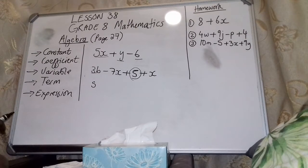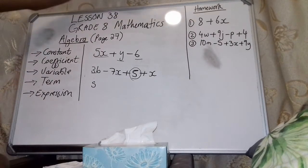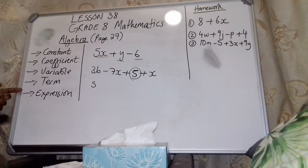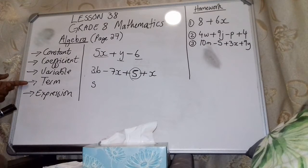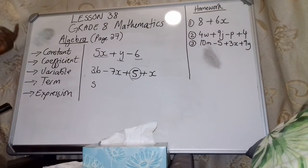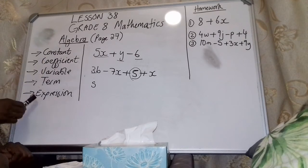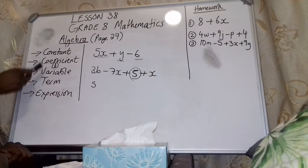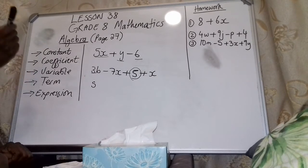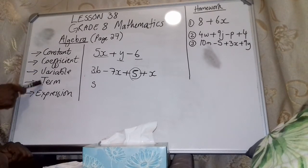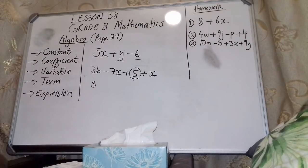Let me recap. An expression is made up of terms. A term is made up of variables and a coefficient. Sometimes a term is just a number with no variable — and we call that a constant. So: expression → made up of terms; a term → has a variable and a coefficient; if there's no variable in the term, it is a constant. I hope that makes sense and you have learned something.